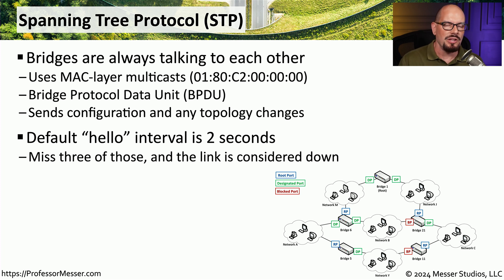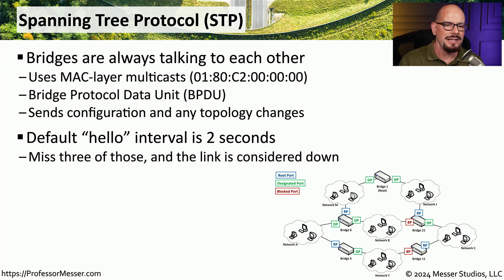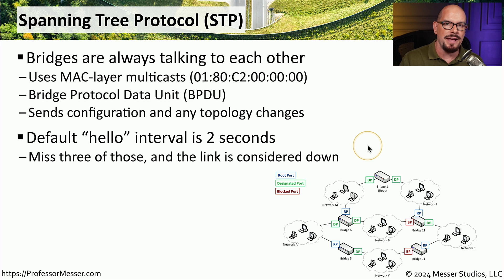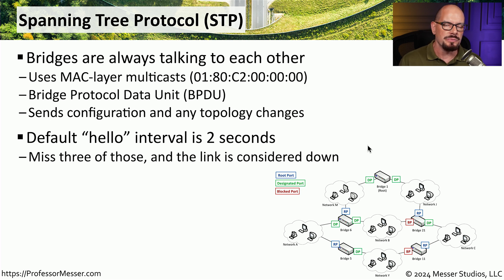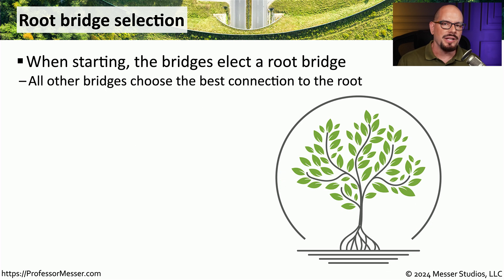If we don't see these hello frames arriving every two seconds, we wait to see if another two seconds goes by without an update, and if finally three of those updates are missed, the link is considered to be down. At that point, Spanning Tree realizes there's been a change to the topology of the network and it redesigns itself to prevent any loops.